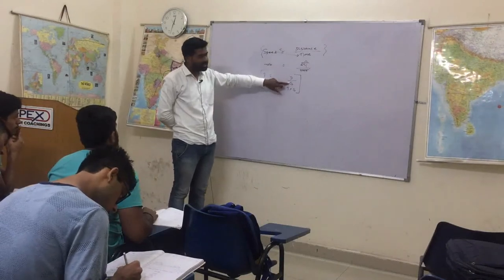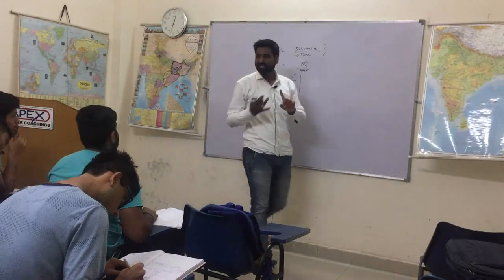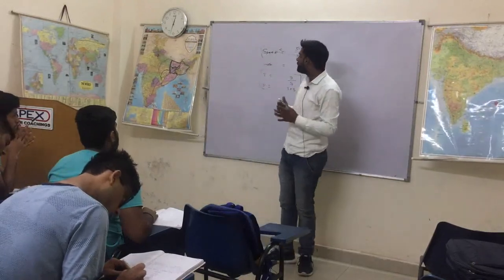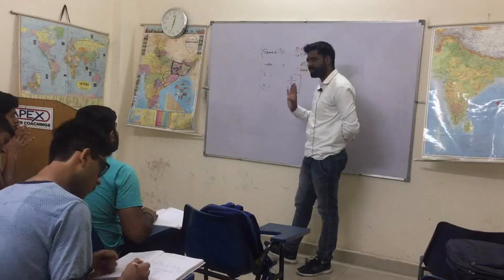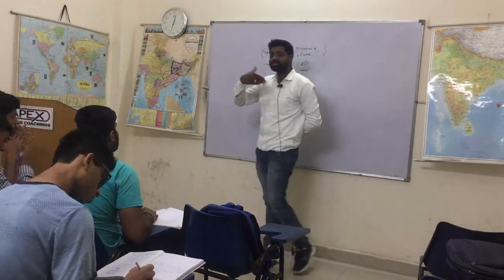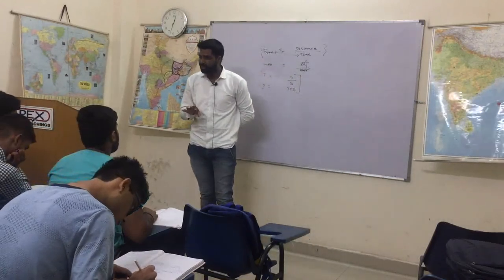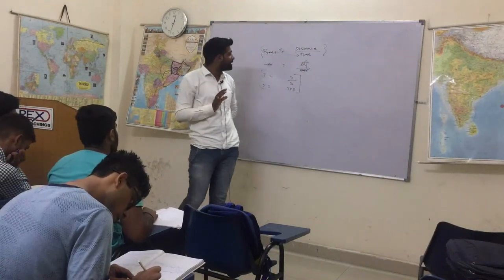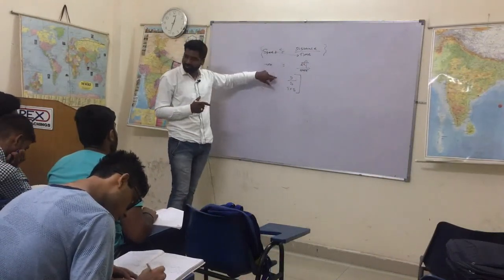So look — when we have to find speed, we take distance divided by time. When we have to find time, we take distance divided by speed. And if we have to find the distance, then it will be multiplied: Time into Speed. This is just the one formula you need to remember.